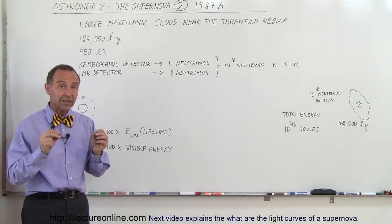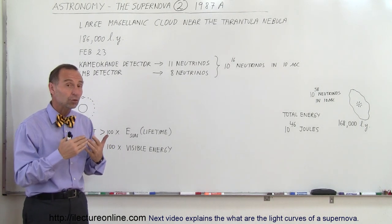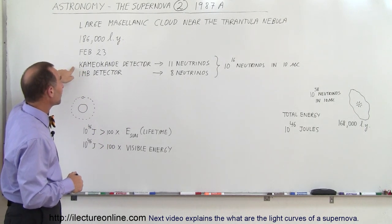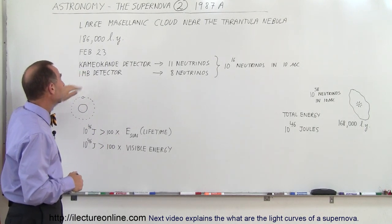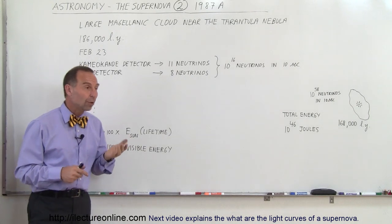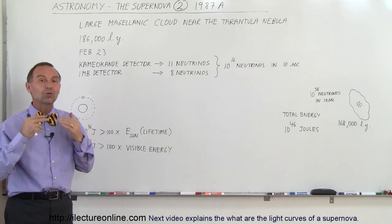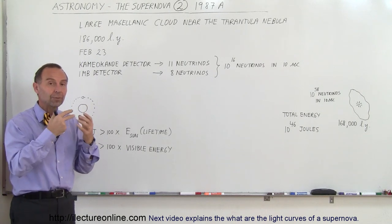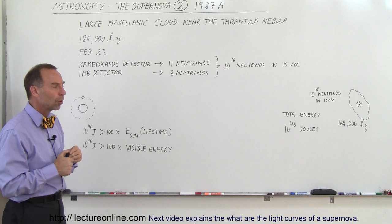But what was interesting was, when they realized that the supernova went off that close, back in the two very famous detectors, the Kamiokanda detector in Japan and the IMB detector in Michigan, recorded a burst of neutrinos about three hours prior to when the visible light started to be seen using telescopes.